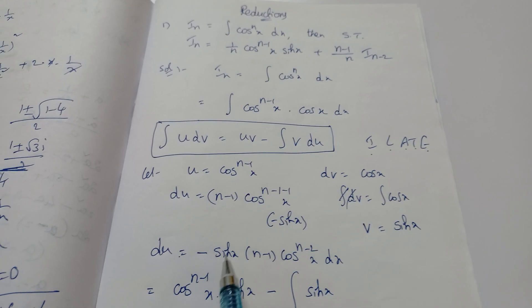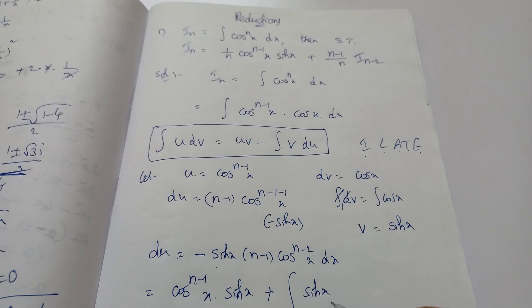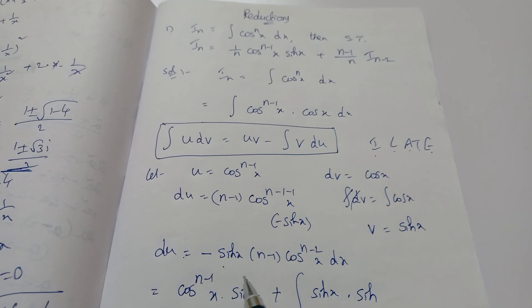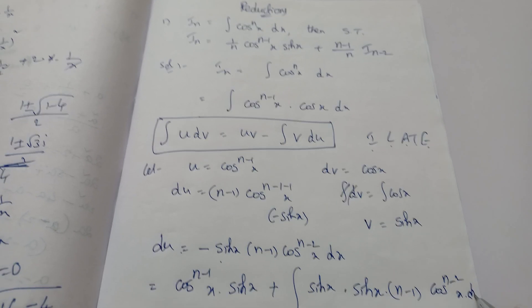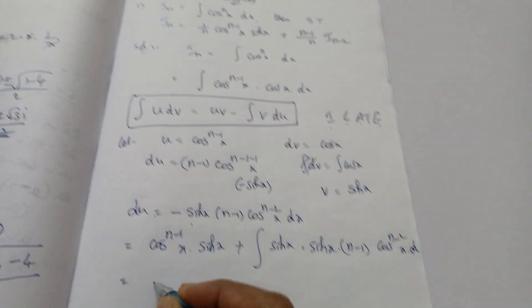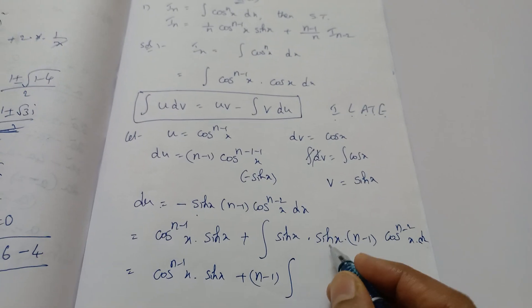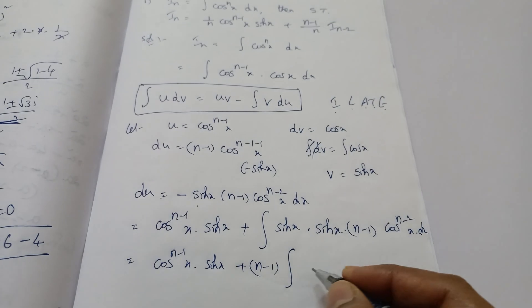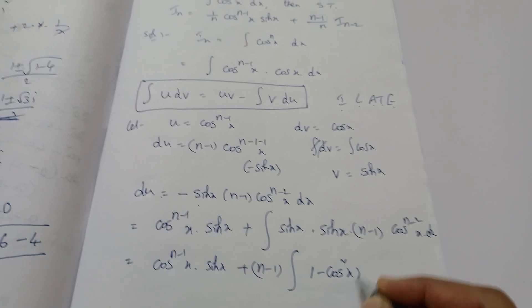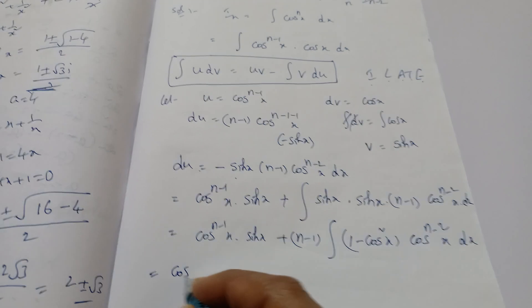Substituting du, the minus signs give: cos^(n−1) x · sin x + (n−1) · ∫ sin x · cos^(n−2) x · sin x dx. That is, cos^(n−1) x · sin x + (n−1) · ∫ sin²x · cos^(n−2) x dx. We now write sin²x in terms of cos as 1 − cos²x, since we want the final answer in terms of cos.